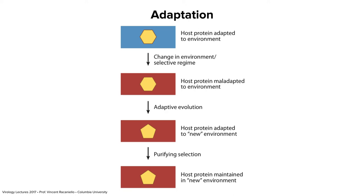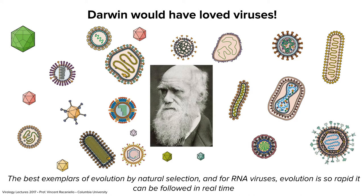Darwin would have loved viruses. He didn't know anything about them, but viruses are the best exemplars of natural selection. For RNA viruses it can happen so quickly that you can see it in real time — you can do an experiment and in a very short period of time, hours, watch natural selection lead to the evolution of new phenotypes.